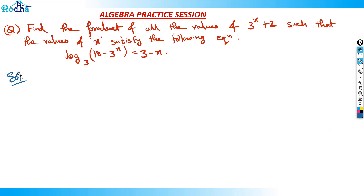Look at this question. This question has got some good concepts. Find the product of all the values of 3 raised to x plus 2, such that the values of x satisfy the equation: log of (18 minus 3 raised to x) base 3 is equal to 3 minus x. This part is very important — I don't need to calculate the value of x.